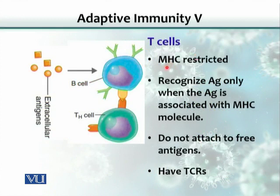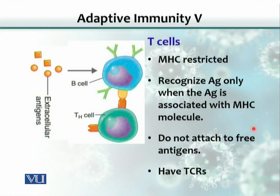The property of T cells is that they are MHC-restricted. MHC stands for major histocompatibility complex. These are glycoproteins displayed onto the surface of various cells. There are two classes of MHC molecules: MHC class 1 and class 2. T cells recognize antigens only when the antigen is associated with an MHC molecule — they are MHC-restricted in terms of antigen recognition. They do not attach to free antigen. B lymphocytes can bind free antigens or antigenic epitopes, but T cells cannot. The T cells would never bind a free antigen.